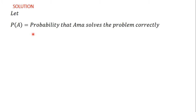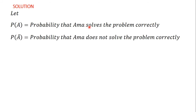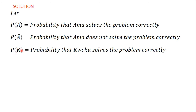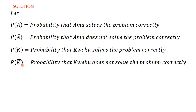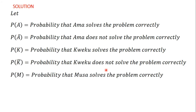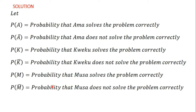We are going to let P(A) represent the probability that Ama solves the problem correctly. Then P(A complement) is the probability that Ama does not solve the problem correctly. Similarly, P(K) represents the probability that Kweku solves the problem correctly, and P(K complement) is the probability that Kweku solves the problem wrongly. We let P(M) represent the probability that Musa solves the problem correctly, and P(M complement) represents the probability that Musa does not solve the problem correctly.